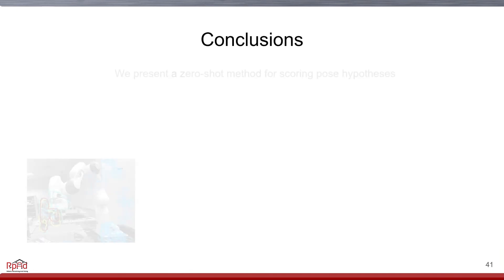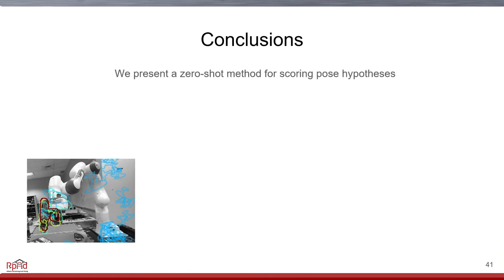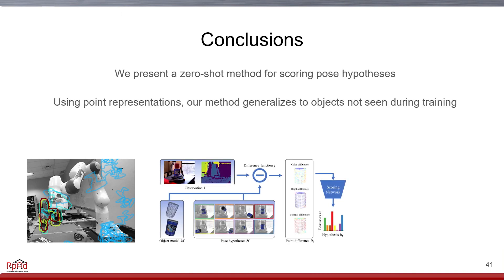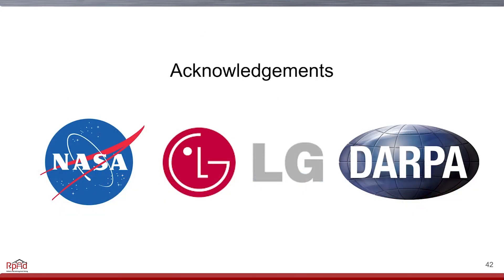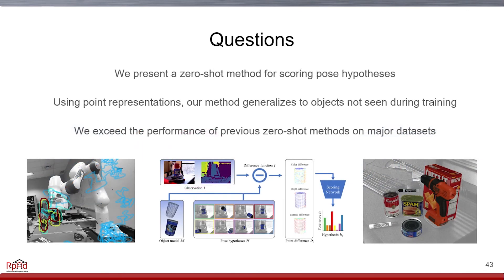In conclusion, in this work we presented a zero-shot method for scoring pose hypotheses. We show that through the use of point difference representations, we are able to accurately estimate the pose of objects not seen at training time, and we exceed the performance of other zero-shot methods on two major datasets. We would like to thank the sponsors of this project, and welcome any questions you may have.